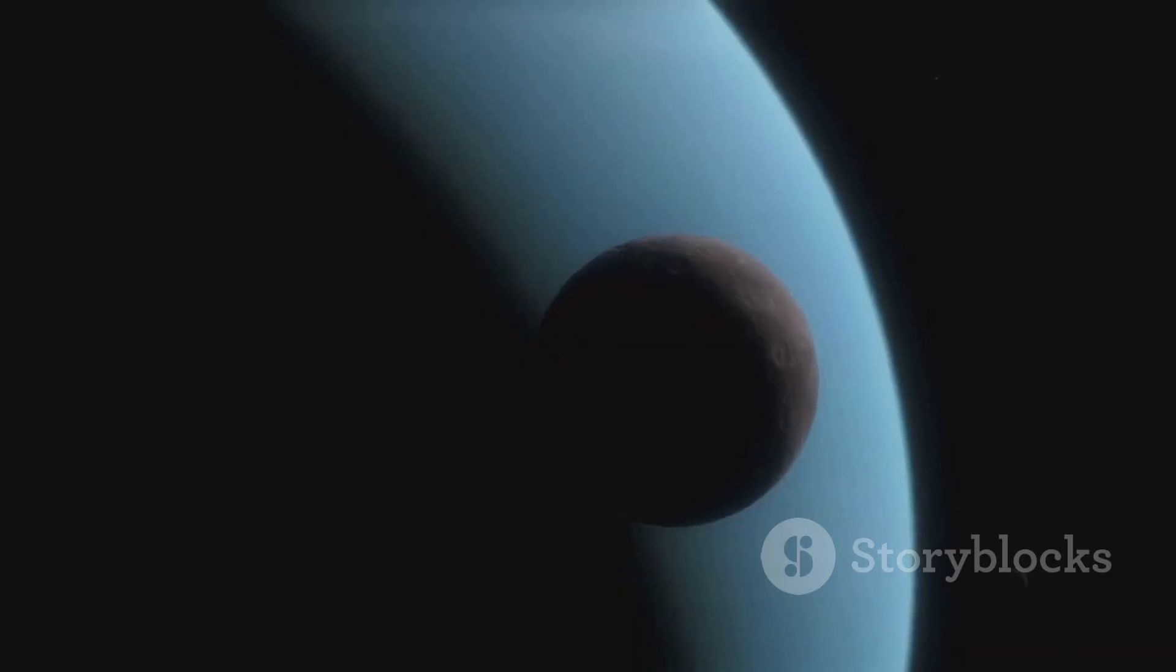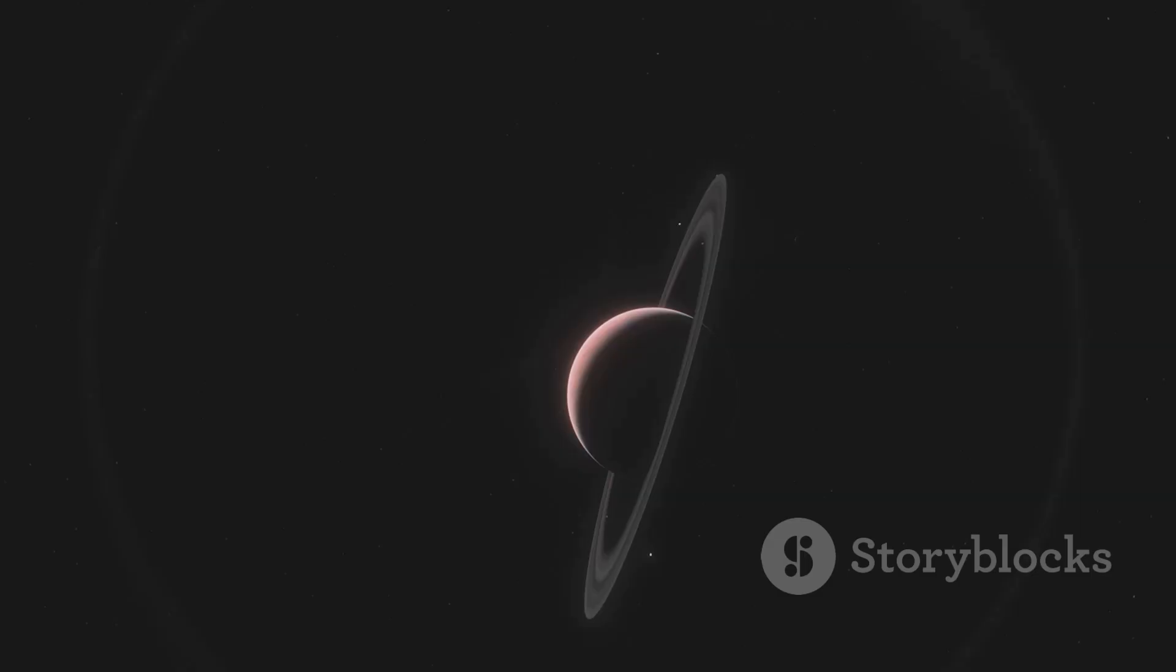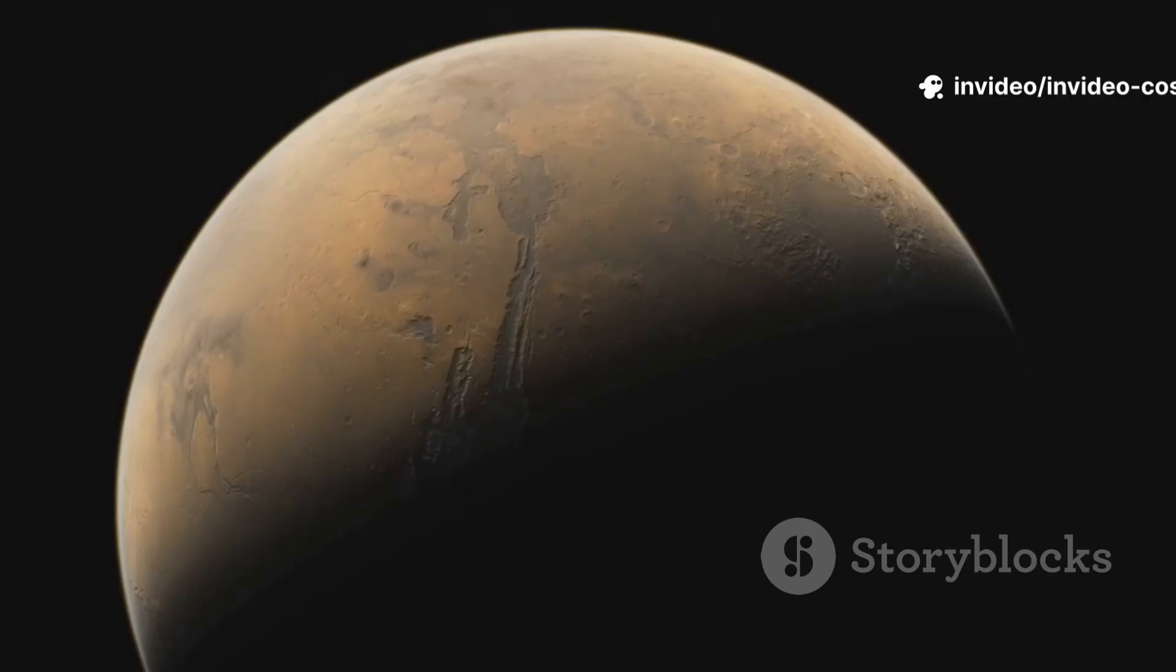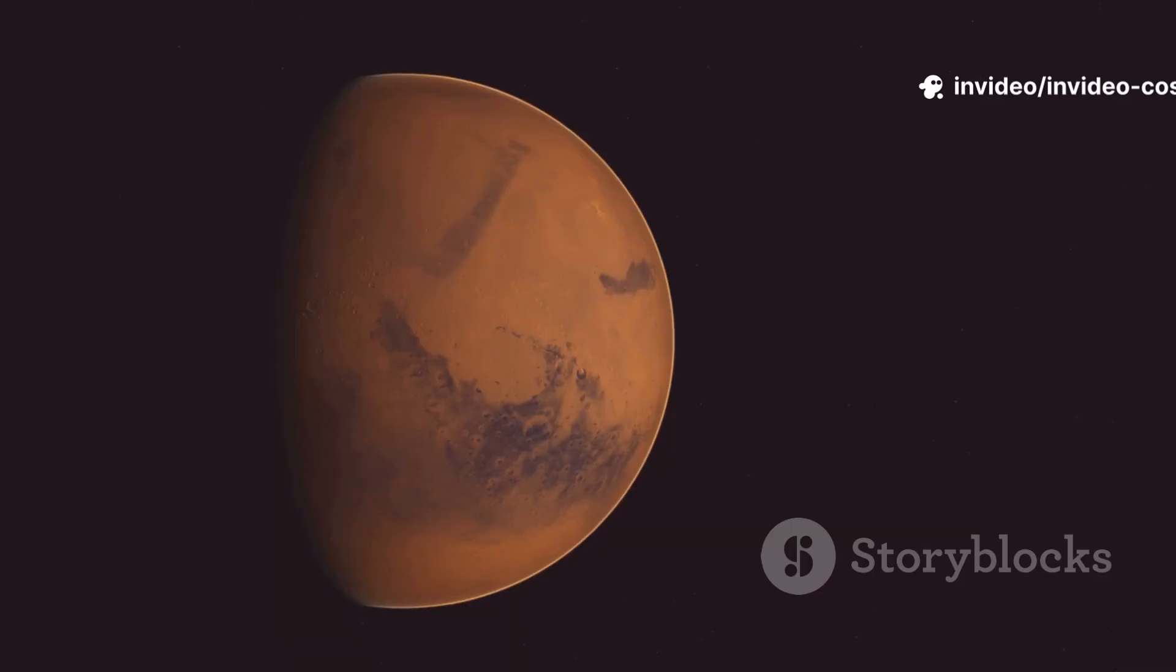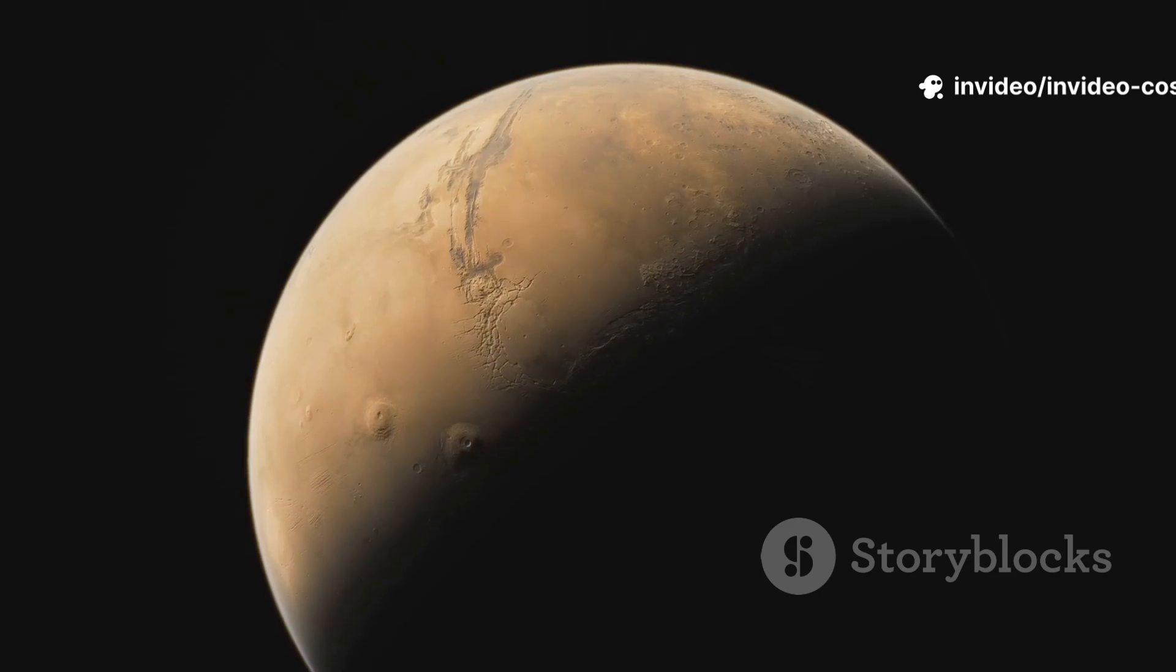Webb's images of Uranus and Neptune reveal rings, clouds and polar caps unseen for decades. Even Mars gets a global snapshot. Temperatures, dust storms and atmospheric gases measured in a single glance.